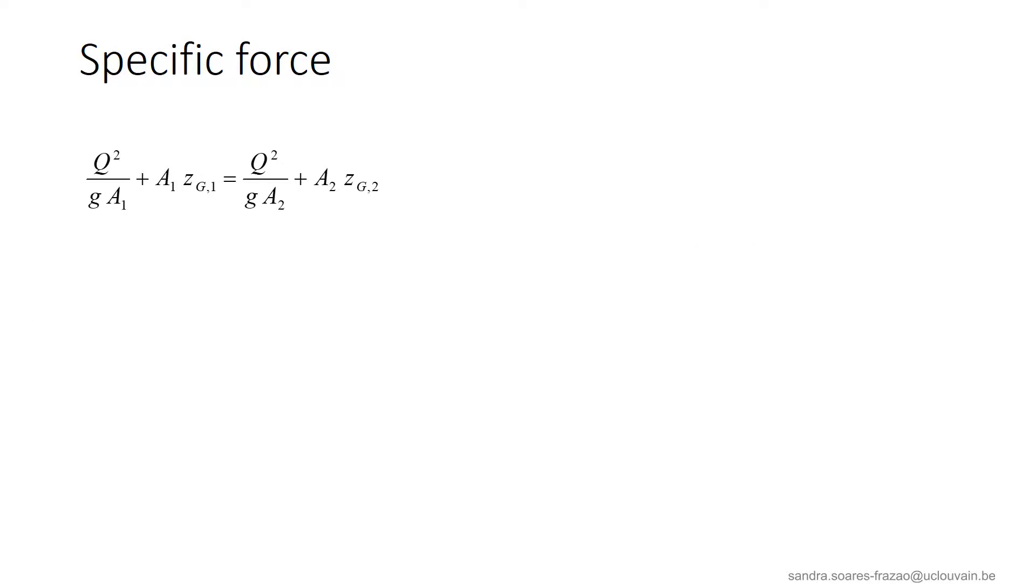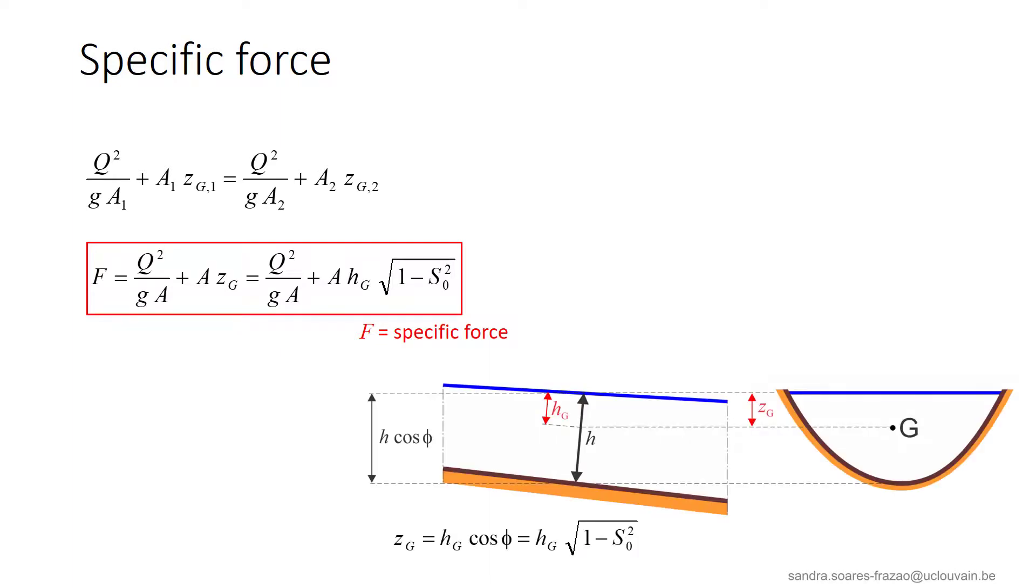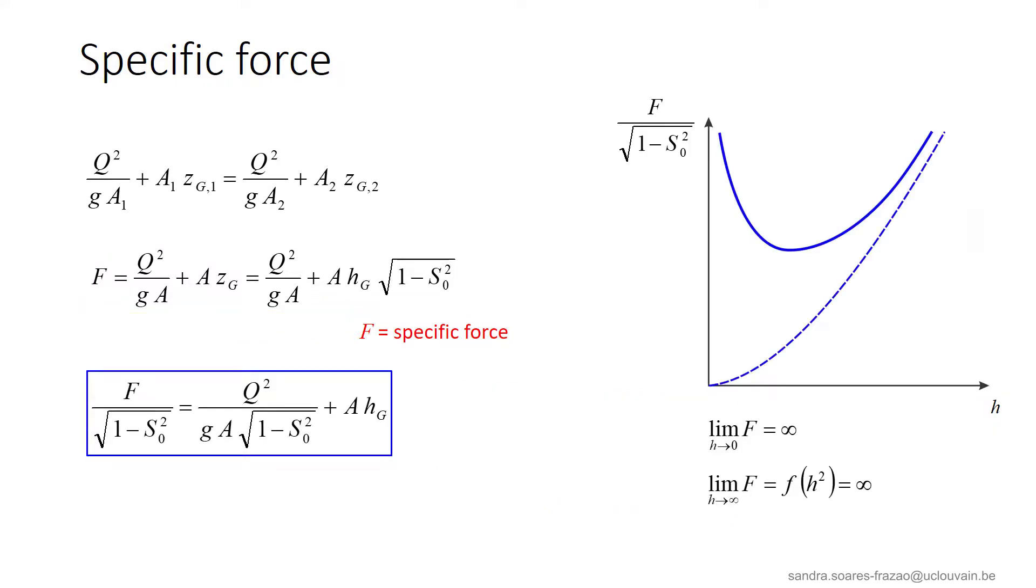We see that this equation expresses the conservation of a quantity across the hydraulic jump. This quantity is the specific force that can be expressed in terms of Zg or in terms of the depth Hg, so the depth of the center of the cross section projected onto the vertical. To analyze this function now, it will be more convenient to write it like this by dividing by the square root of 1 minus S0 square.